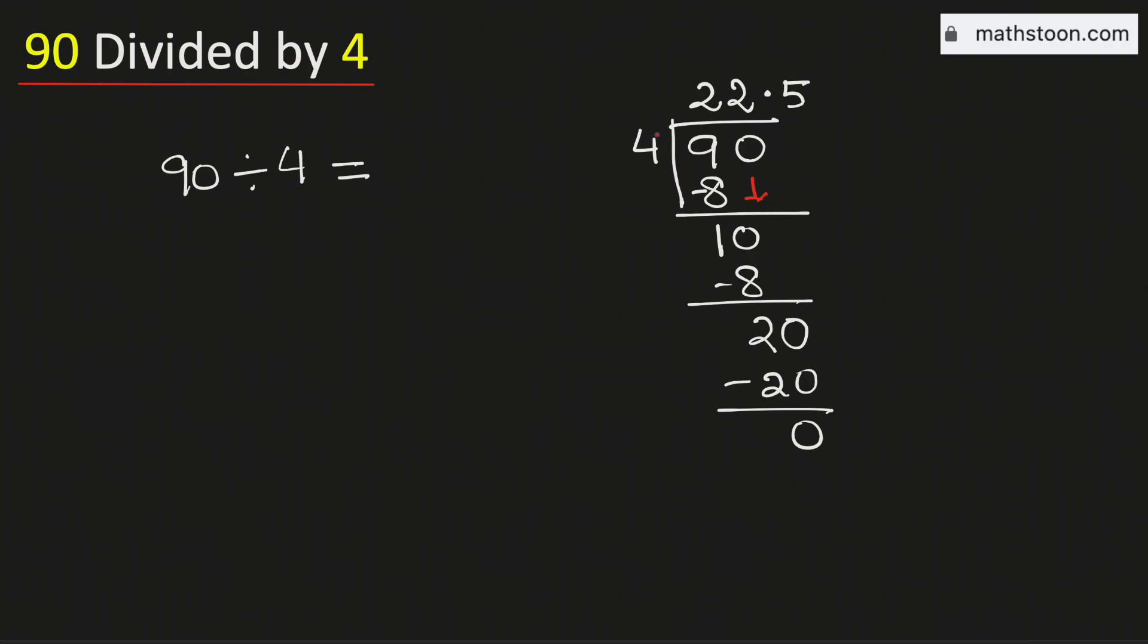Therefore, 90 divided by 4 is equal to 22.5. And this is our final answer.